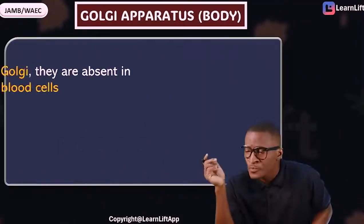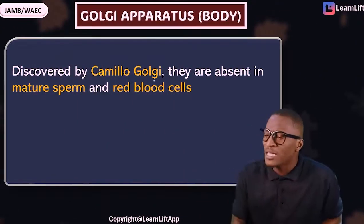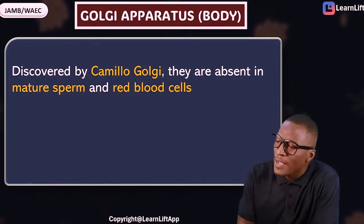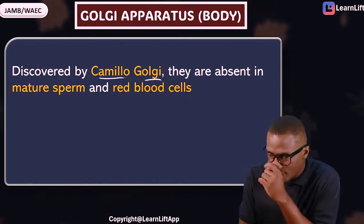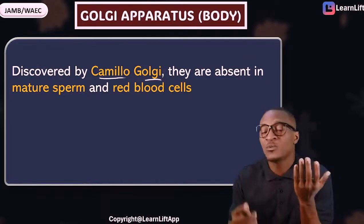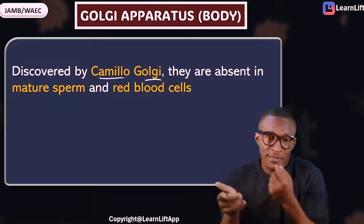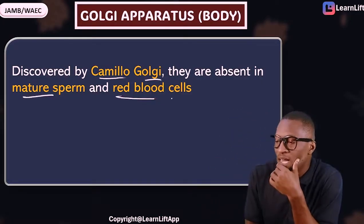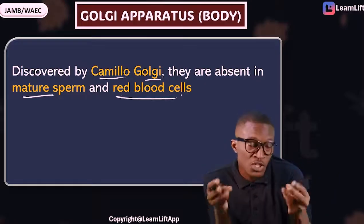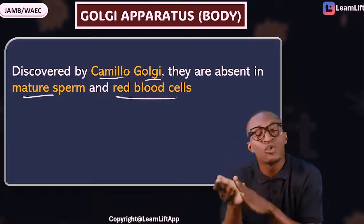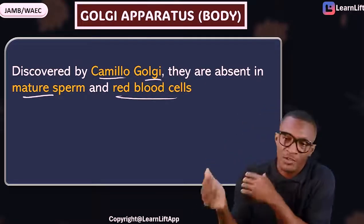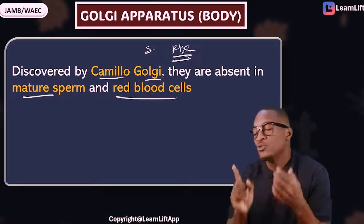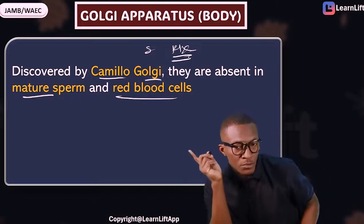Take note: the Golgi apparatus was discovered by Camillo Golgi, and he named it after himself. Also note that the Golgi apparatus is absent in mature sperm cells and red blood cells — mature sperm cells and red blood cells do not have the Golgi apparatus.